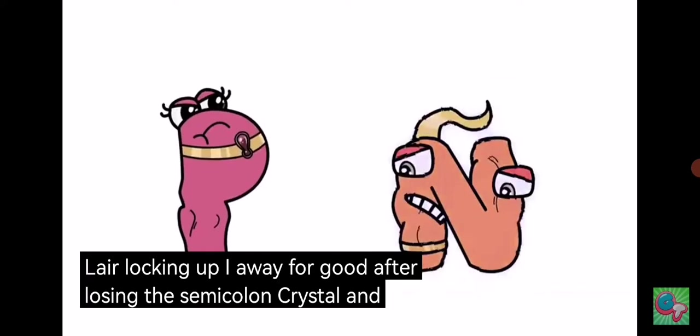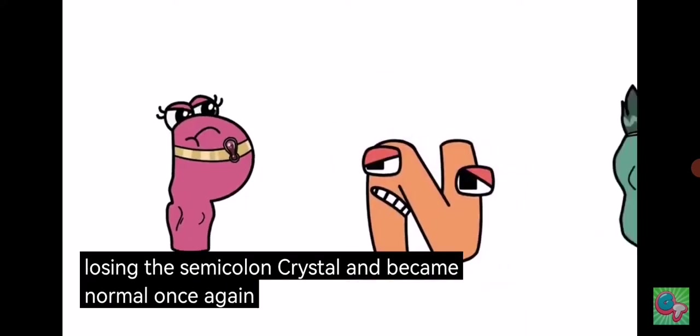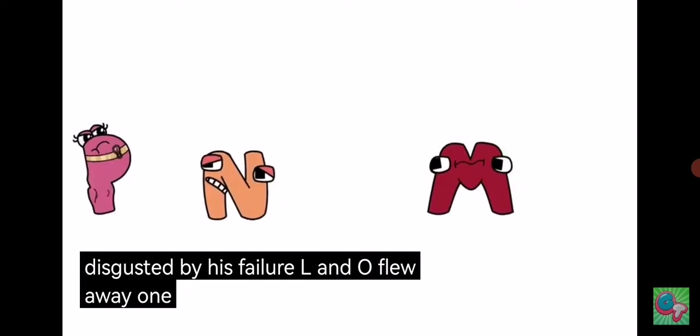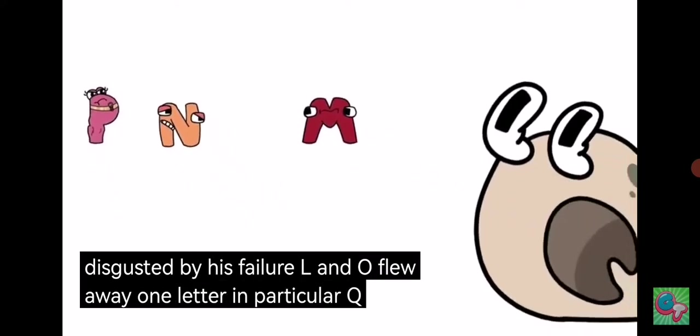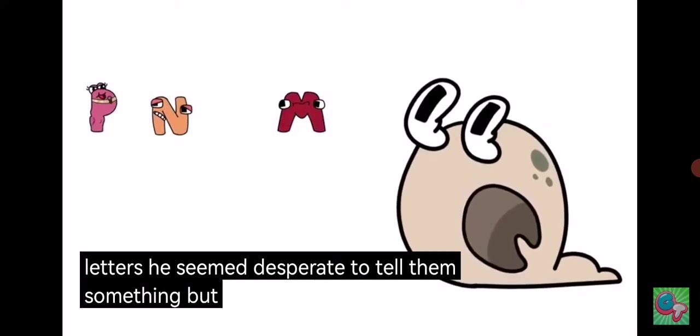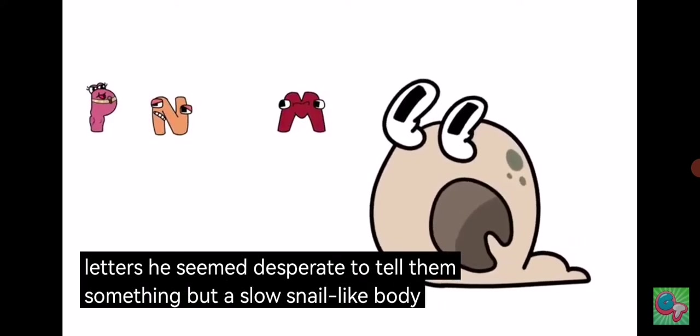Disgusted by his failure, L and O flew away. One letter in particular, Q, frantically crawled towards the other letters. He seemed desperate to tell them something, but his slow snail-like body never allowed him to fully reach them.